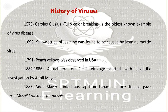Next point: History of Viruses. In 1576, Carolus Clusius noted that tulip color breaking is the oldest known example of virus disease. In 1692, yellow stripe of jasmine was found to be caused by jasmine mosaic virus. In 1791, peach yellow was observed in USA.